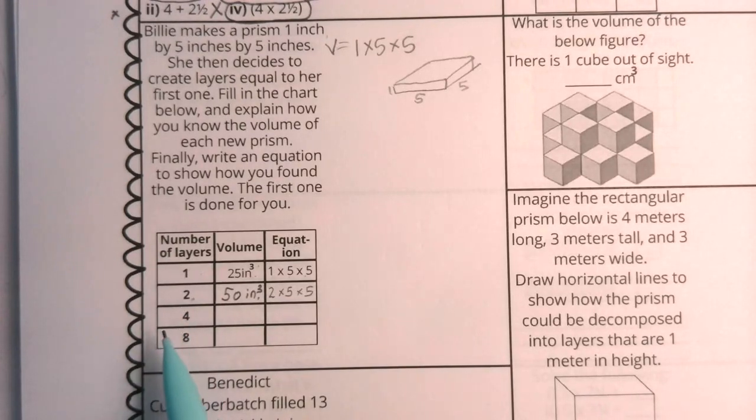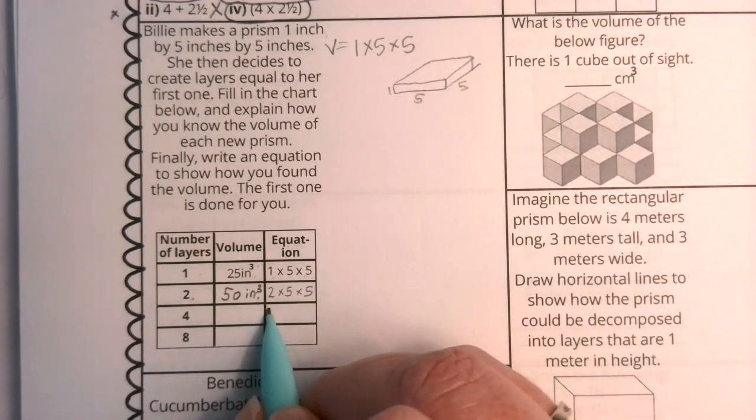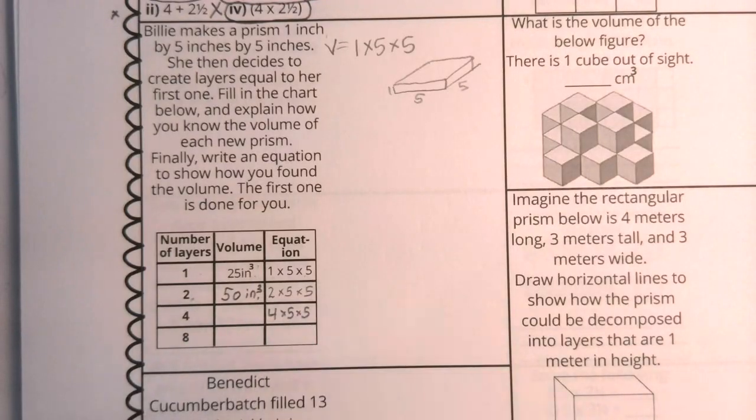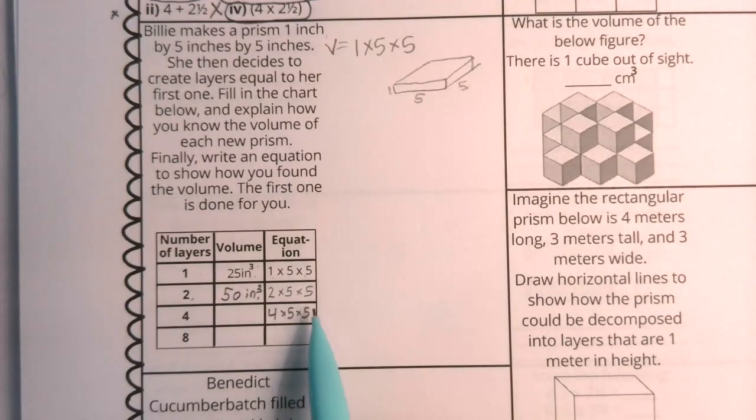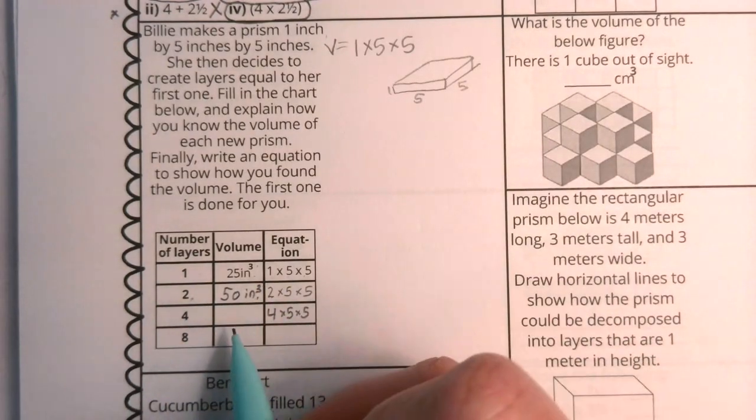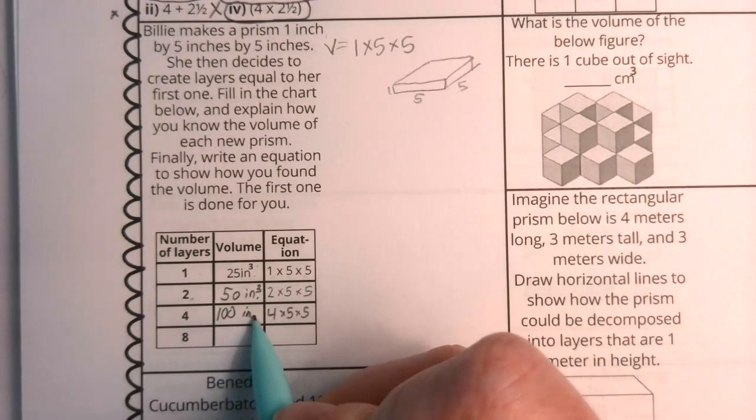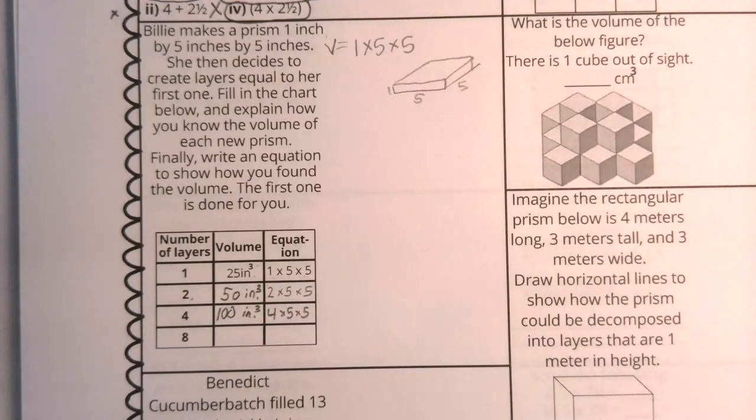Now notice we're skipping layer three and we're going right to layer four. So now instead of a two, I'm going to have a four in the front and I'm going to multiply that by five times five. Five times five is 25. 25 times four is like having four quarters. How many cents do you have? Well, you have a hundred, right? And that would be a hundred inches cubed.